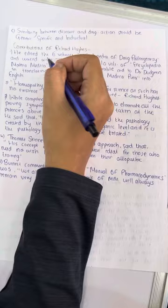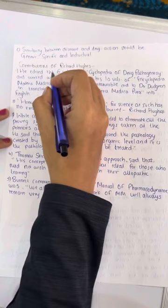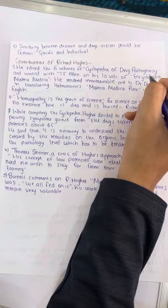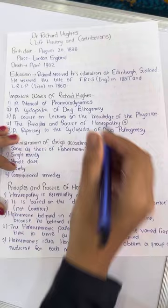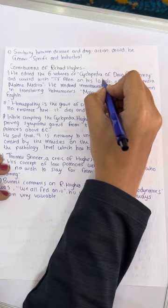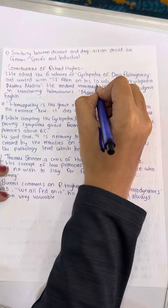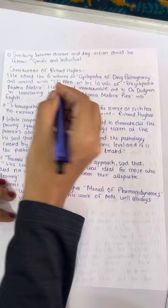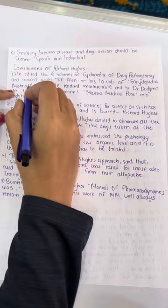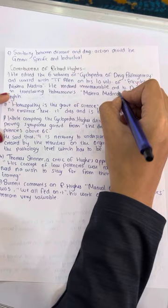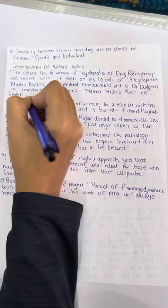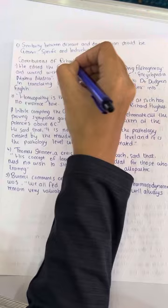What are the important contributions of Richard Hughes to homeopathy? He edited the six volumes of Cyclopedia of Drug Pathogenesis. He worked with Dr. T.F. Allen on his 10 volumes of Encyclopedia of Materia Medica — we all know that Dr. T.F. Allen has written 10 volumes on Encyclopedia of Materia Medica. He also rendered immeasurable aid to Durrigan in translating Hahnemann's Materia Medica Pura into English. Even in the translation of Hahnemann's Materia Medica Pura, Richard Hughes made significant contributions.